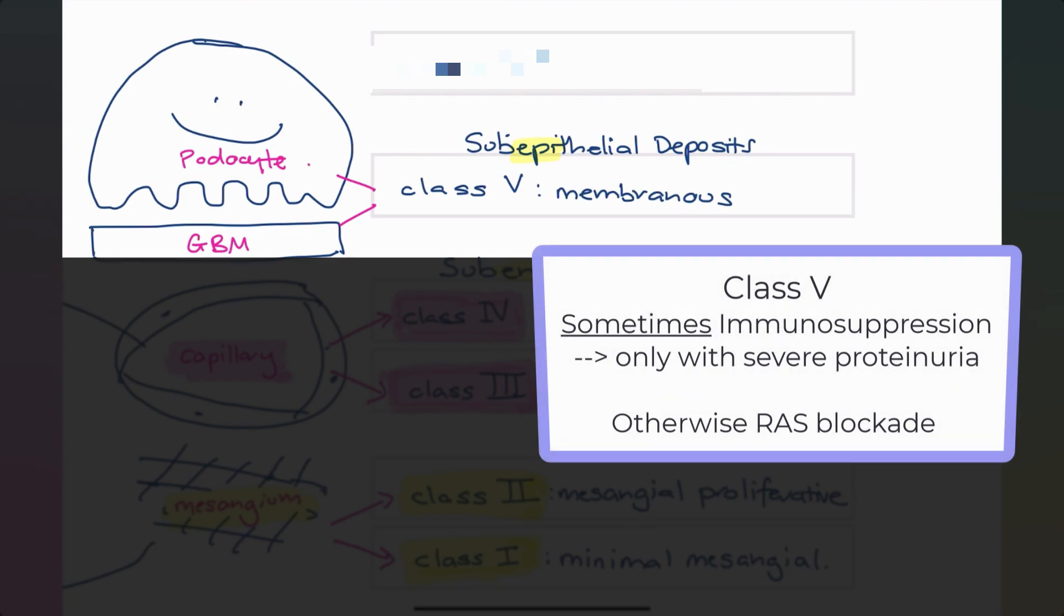Now, class five may or may not warrant immunosuppression. That really depends on whether they have either a hint of class three or four on their biopsy as well, in which case you would immunosuppress them, or if they had nephrotic range proteinuria. The current guidelines for lupus would suggest that this group of patients who have the nephrotic range proteinuria would benefit from immunosuppression.